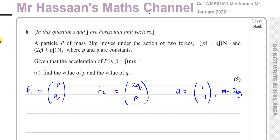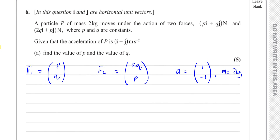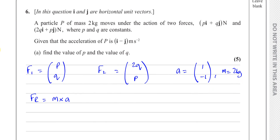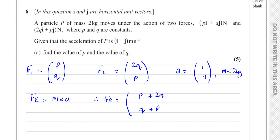We know that F = ma, so the resultant force equals mass times acceleration. We know the mass and acceleration, and we can find an expression for the resultant force. The resultant force is F1 plus F2, which gives components p + 2q in the i-direction and q + p in the j-direction.